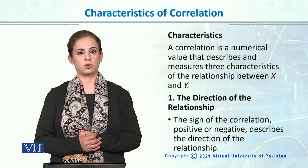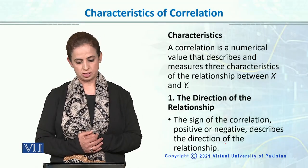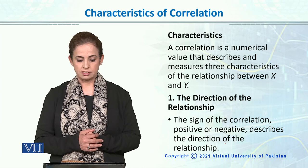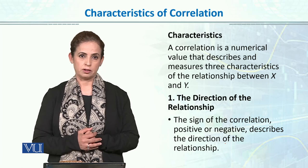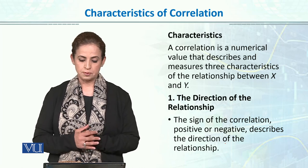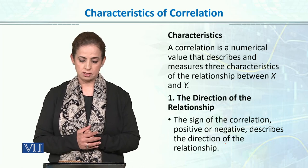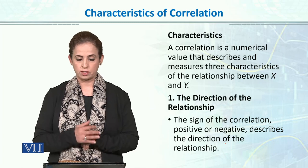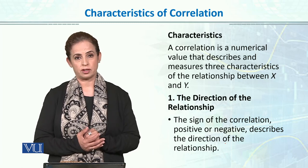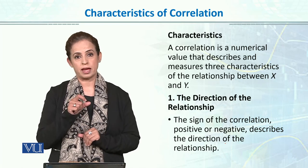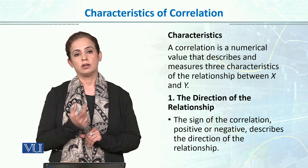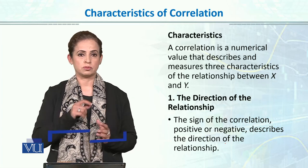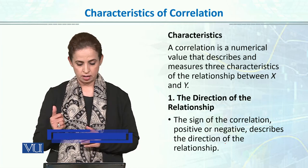What are the characteristics of the correlation coefficient? Correlation is a numerical value that describes and measures the three characteristics of the relationship between x and y variables. It is denoted by r and ranges from 0 to 1.